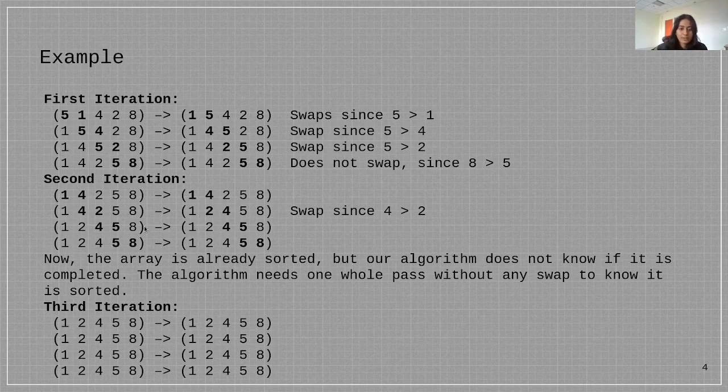Now the array is already sorted but our algorithm does not know that. So the algorithm needs one whole pass without any swap to know it is sorted. At the end of third iteration, no swap occurs and we get the sorted array which is 1, 2, 4, 5, 8.